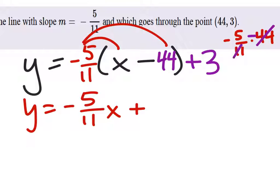The 44 and the 11 are divisible by each other, so that ends up being a 4. So 5 times 4 is 20.